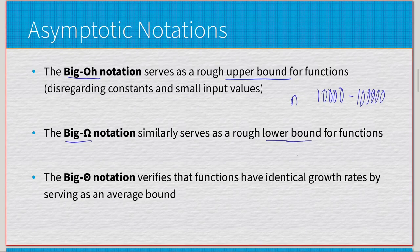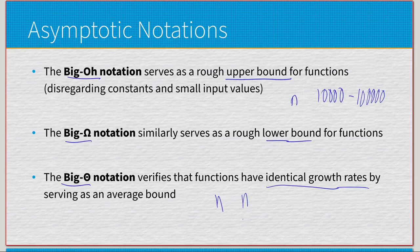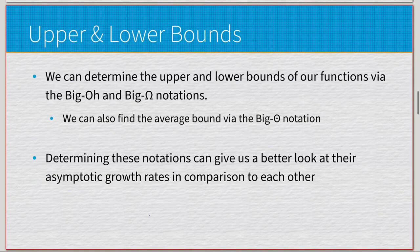Big Omega and Big O are mirrors of each other. Then we have Big Theta, which is solely used to verify that two or more functions have identical growth rates. So if one has a linear growth rate, the other can also have a linear growth rate — we can view Big Theta as the average bound.